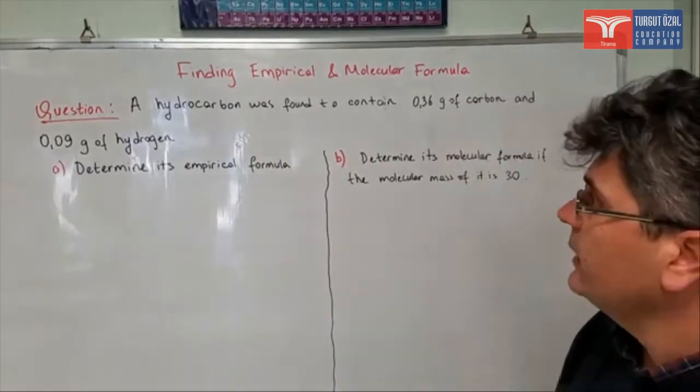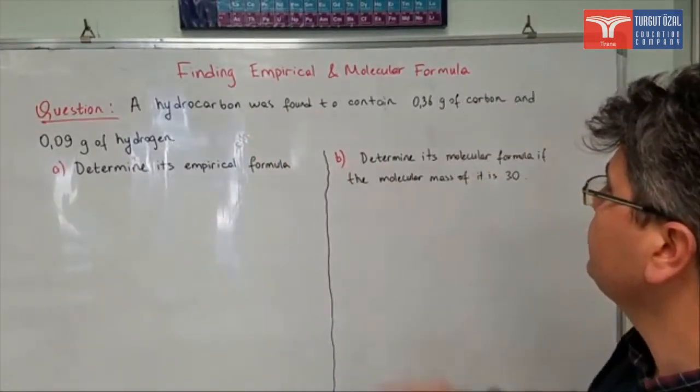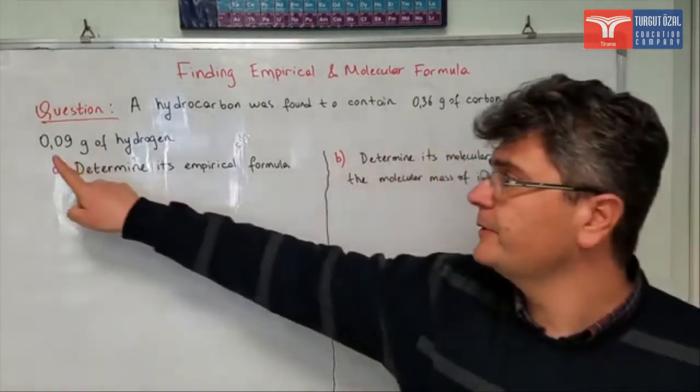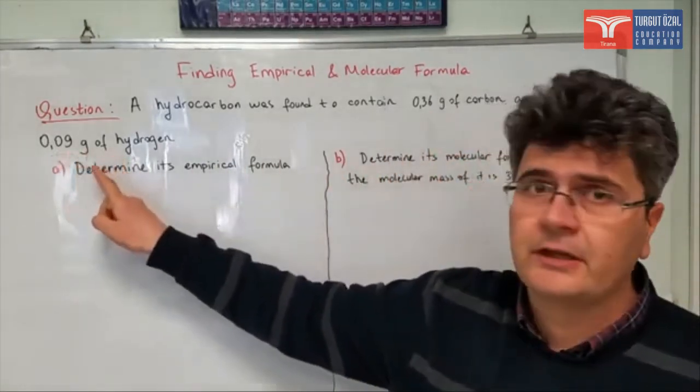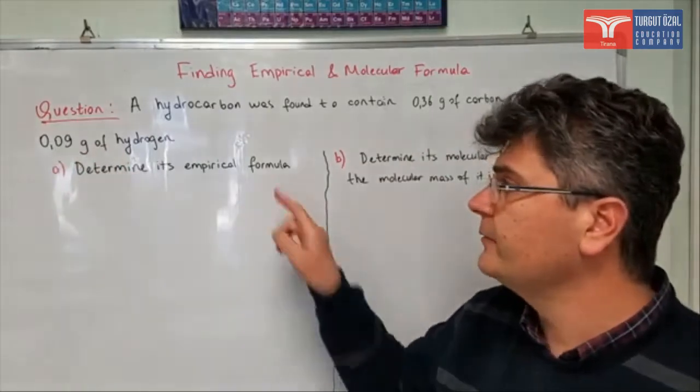Let's read the question first. A hydrocarbon was found to contain 0.36 grams of carbon and 0.09 grams of hydrogen. Determine its empirical formula.